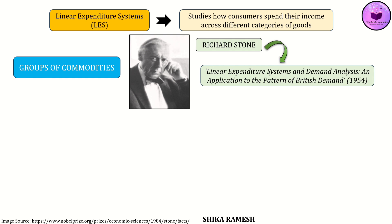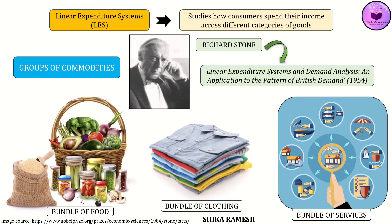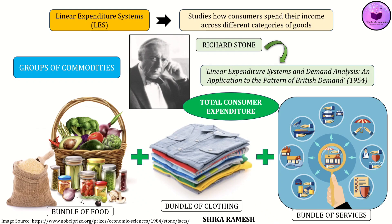In LES, for example, we can group all food and beverages together, all clothing items together, or services like transport, rent and entertainment together. When we add the expenditures incurred for all these groups, we get the total consumer expenditure. That is why LES is very useful in large-scale economic studies like household budget surveys, as it helps to break down the overall consumption function into different meaningful categories.